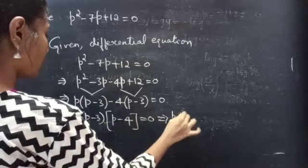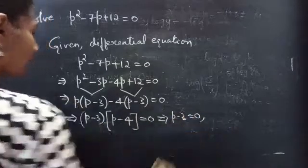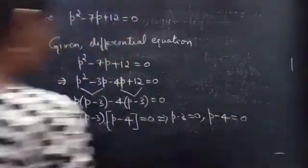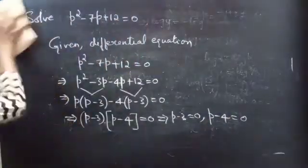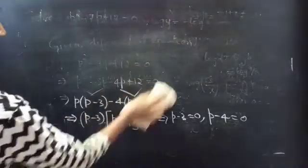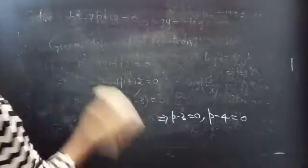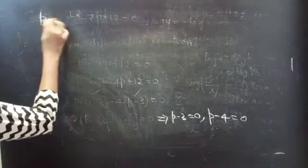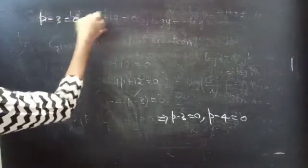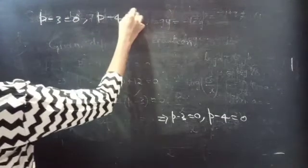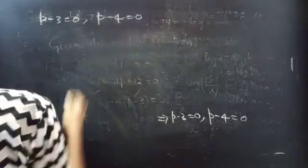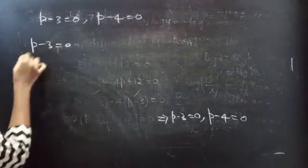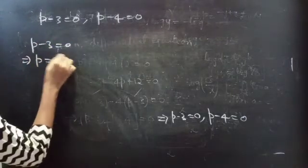Then, P minus 3 equals to 0 and P minus 4 equals to 0. So, let's consider the first equation P minus 3 equals to 0. You can write this as P equals to 3.